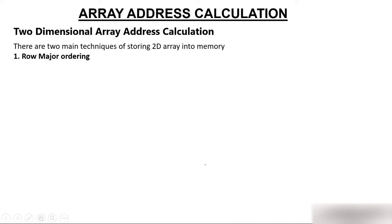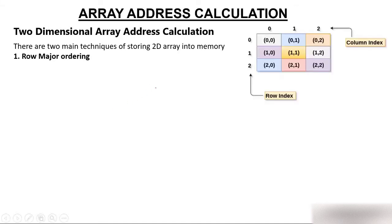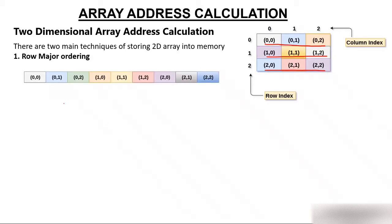There are two major techniques for storing a 2D array. If you are thinking that in memory we store data in a square or rectangular shape, that is totally wrong. We store data either row-wise or column-wise. If we store row-wise, this is called row major order. We never store an array in a rectangular fashion — we always store it in a linear fashion, just like a 1D array.